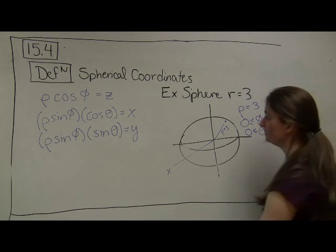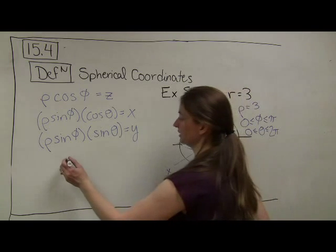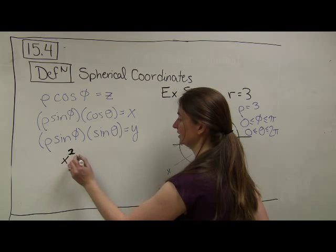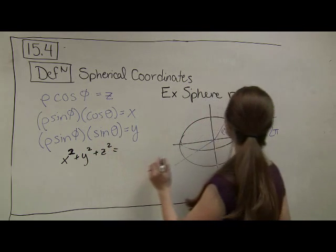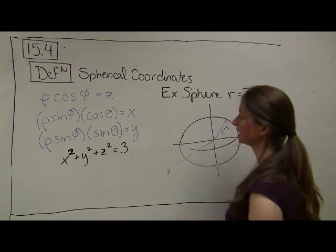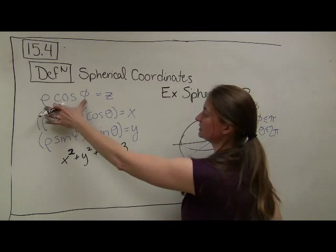Another way would be algebraically. Algebraically, I could say, aha, I know the formula for a sphere. This is saying that x squared plus y squared plus z squared is equal to 3.